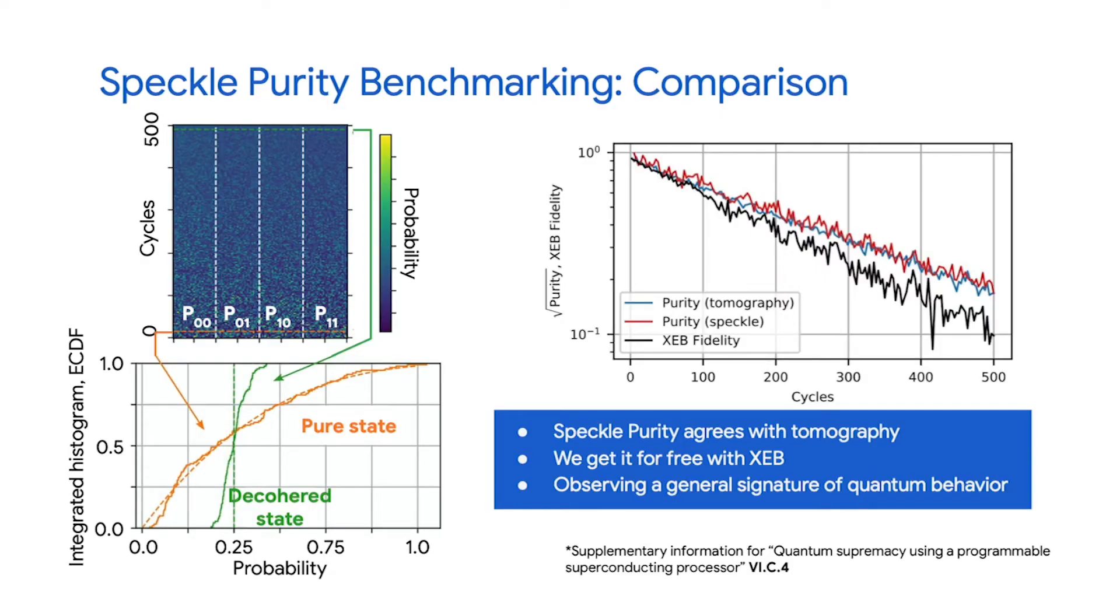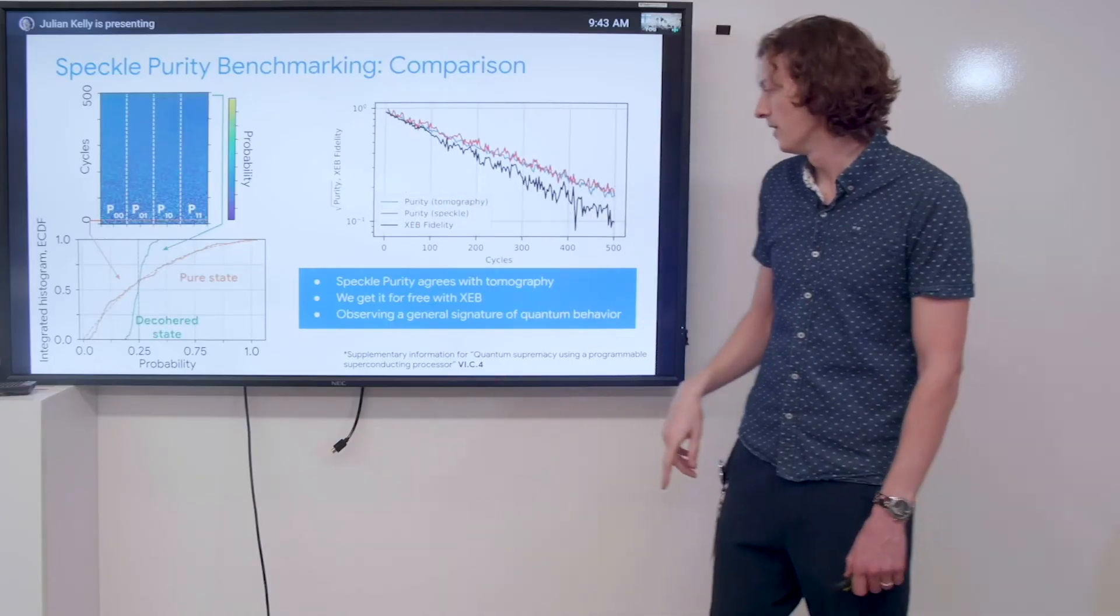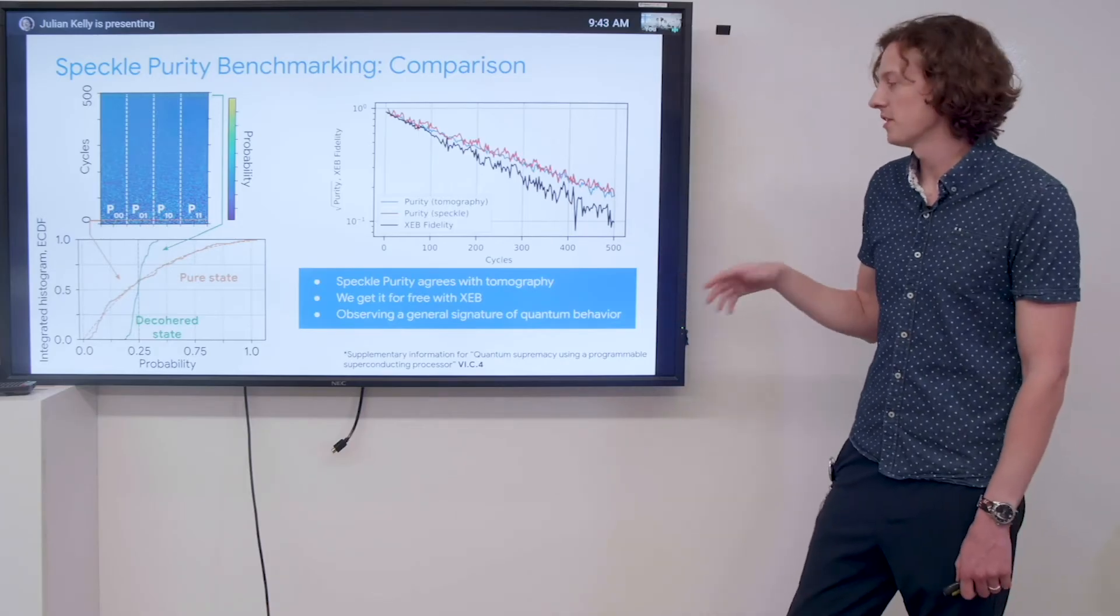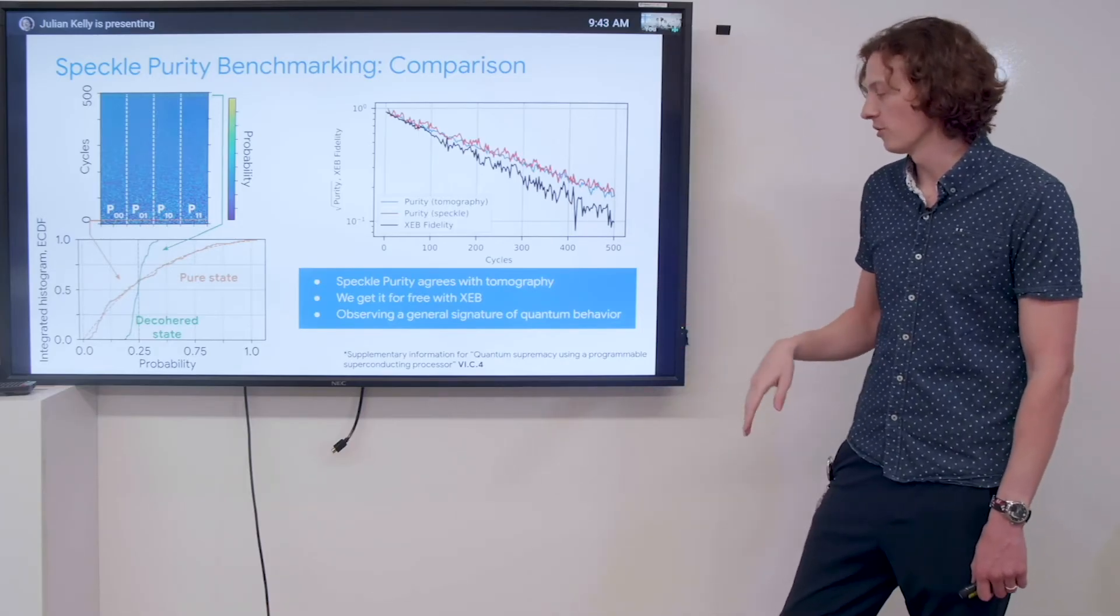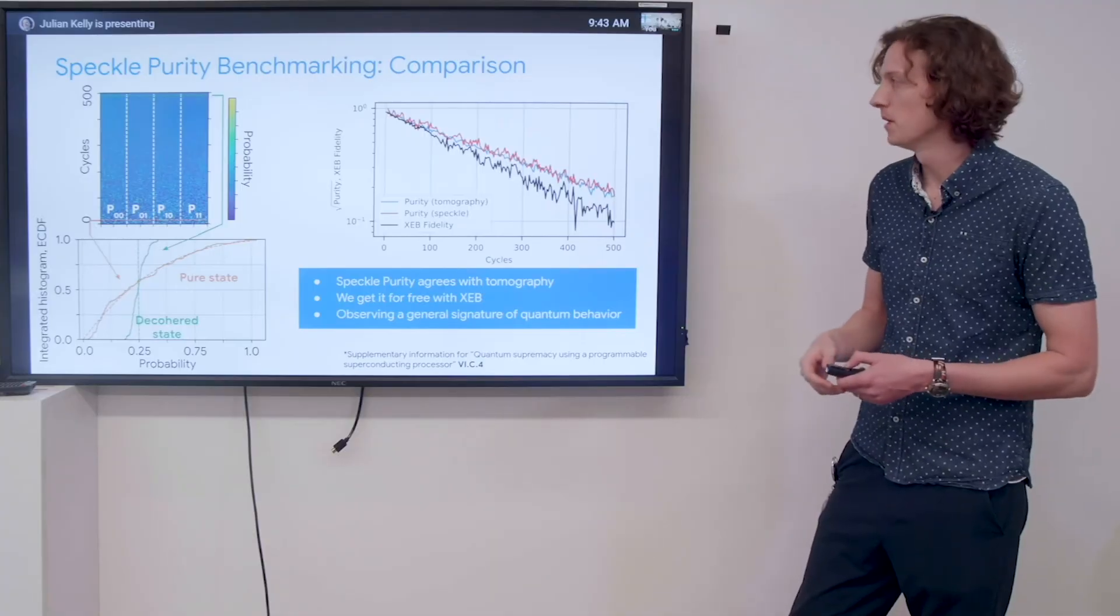Indeed, they provide an error lower bound. They're outperforming the XEB fidelity because there can be some, for example, calibration error. So speckle purity agrees with tomography. We get it for free from this raw XEB data, and we are noticing this by basically observing a general signature of quantum behavior. That's what these contrasts mean.